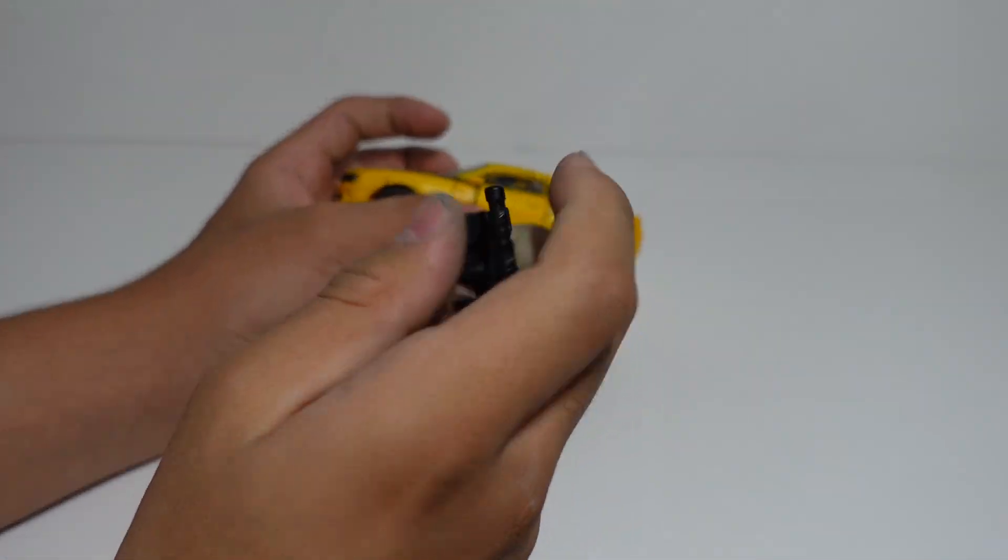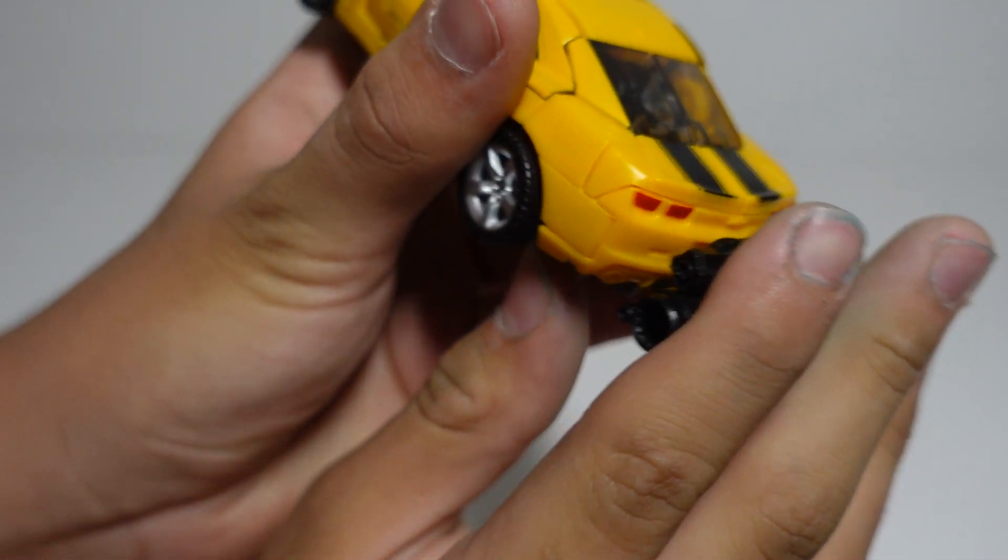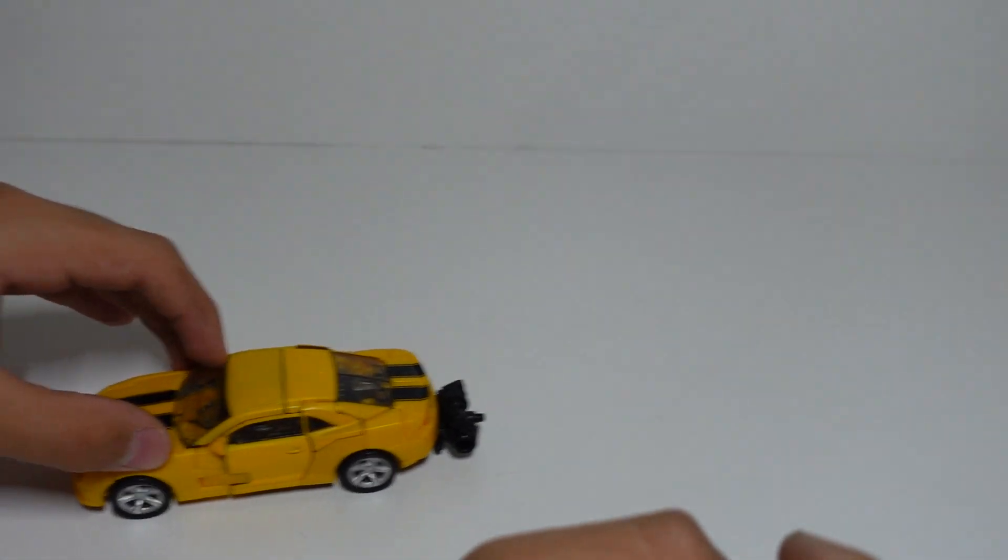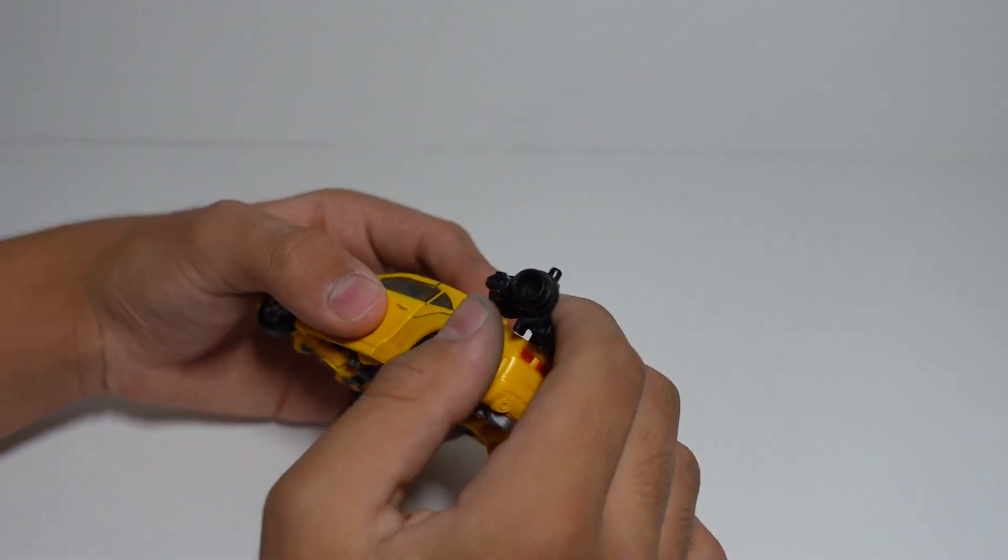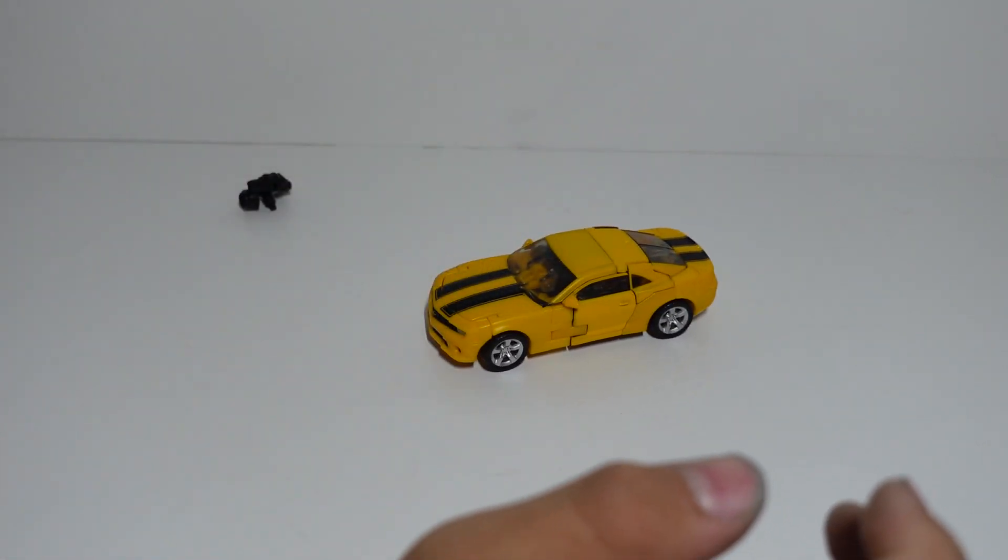And the cannon that he came with in the box, you can attach it right here, to the back. You can attach it to the back if you want, or you could have it just separate, but just keep it somewhere like that, and then you could have it like that.